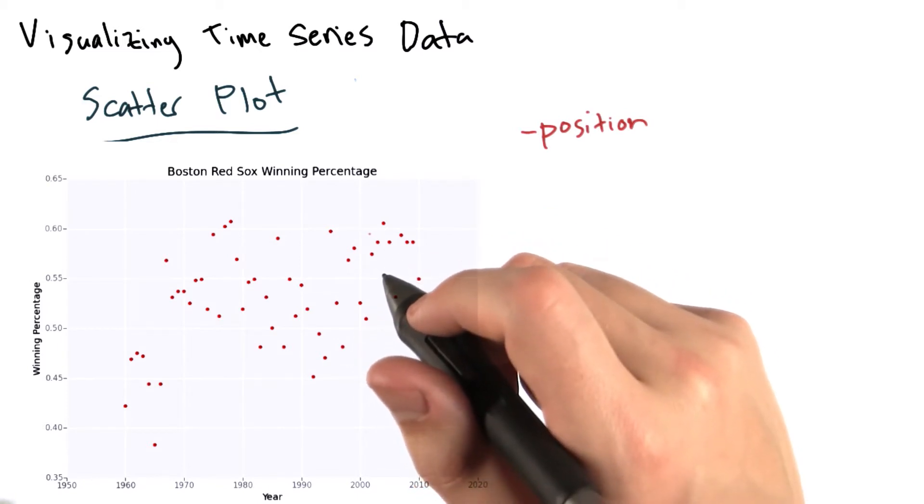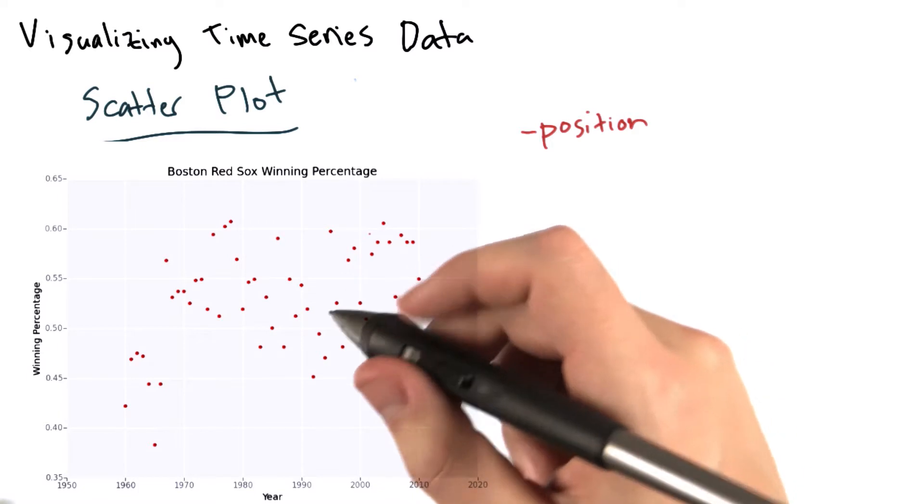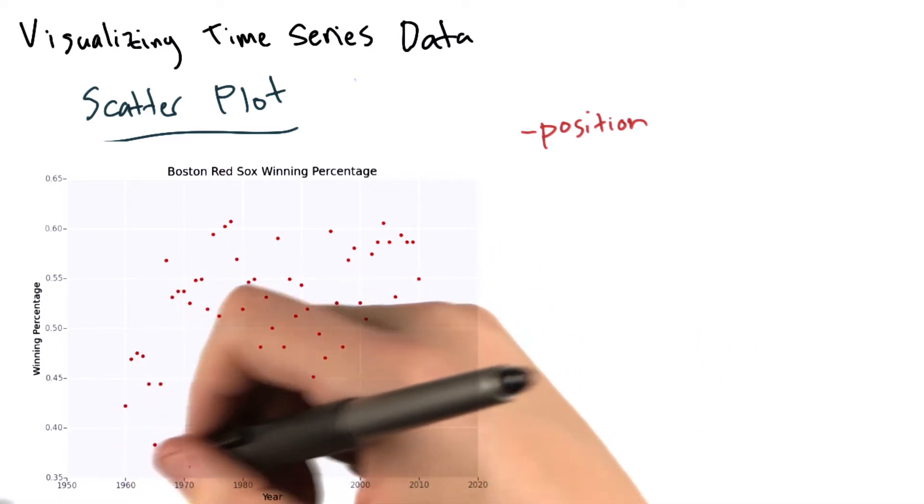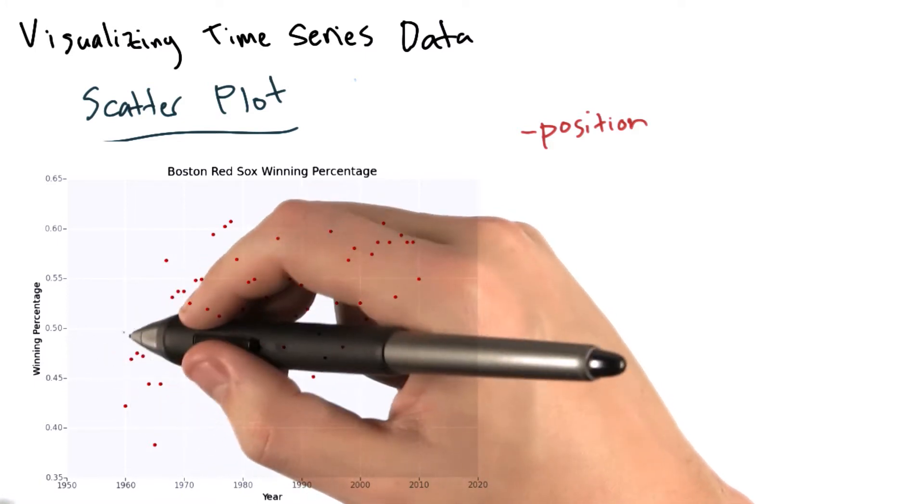In this chart, the main visual cue that we're using is position. The year for a particular winning percentage is dictated by where we are in the x coordinate, and we see what the winning percentage is by looking at a data point's position on the y-axis.